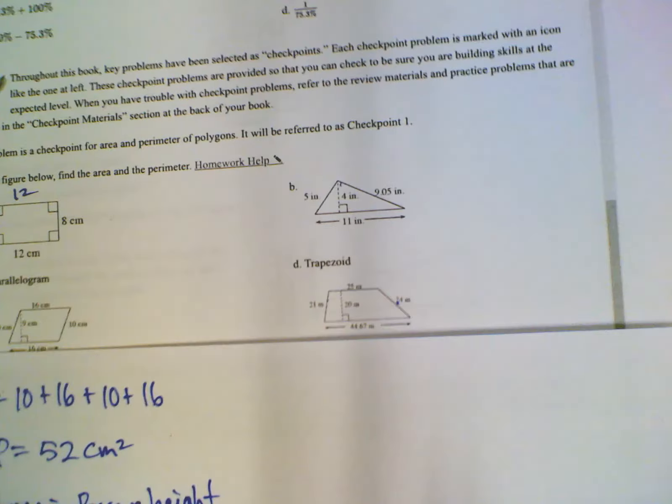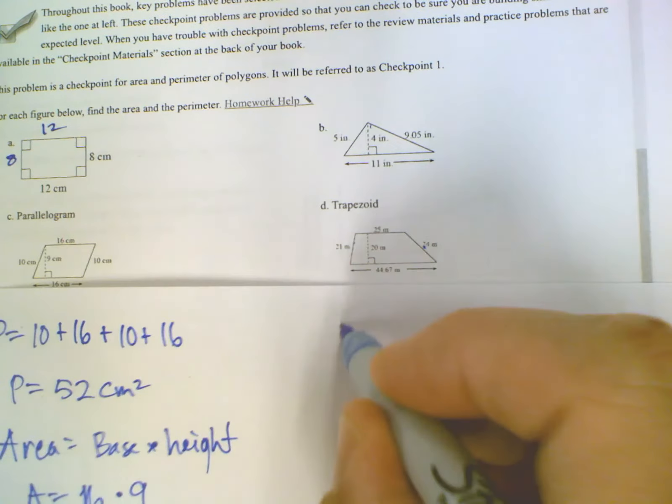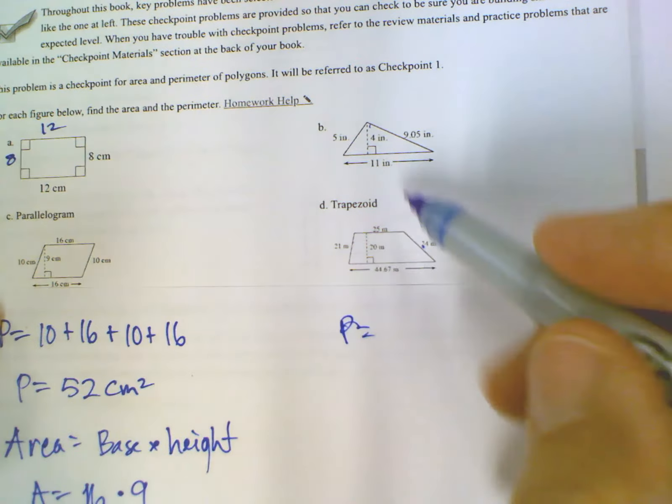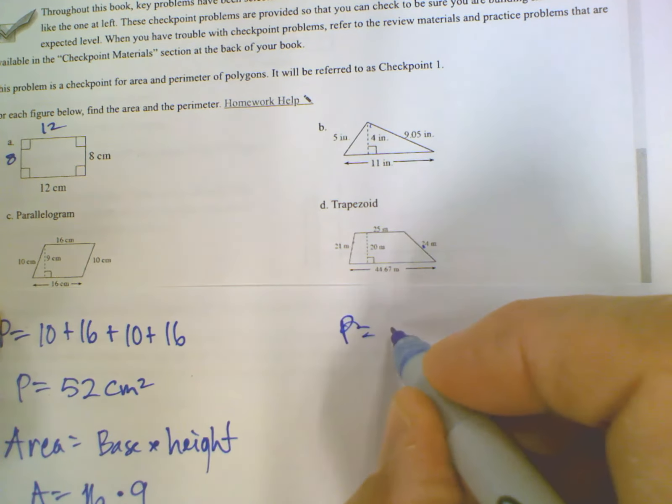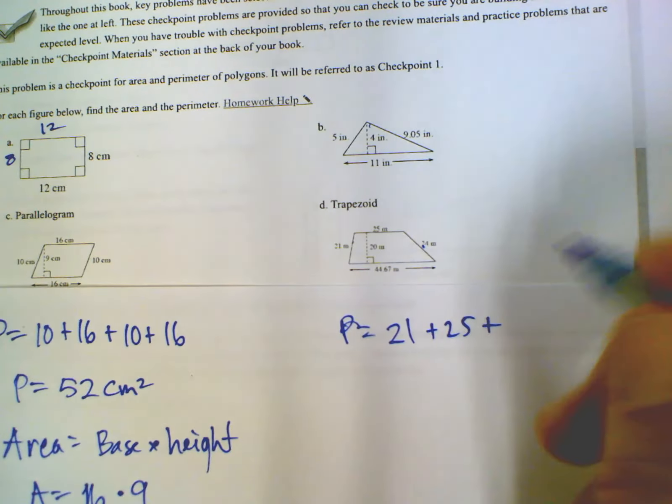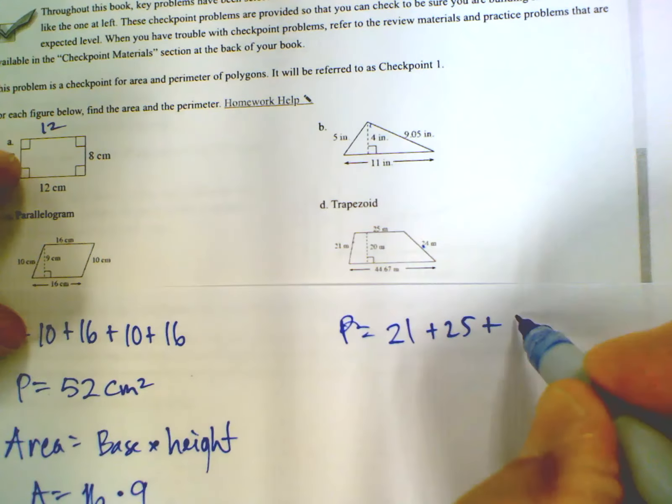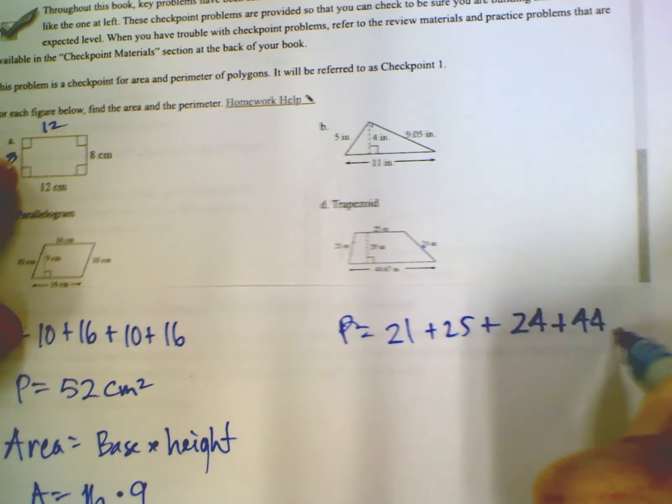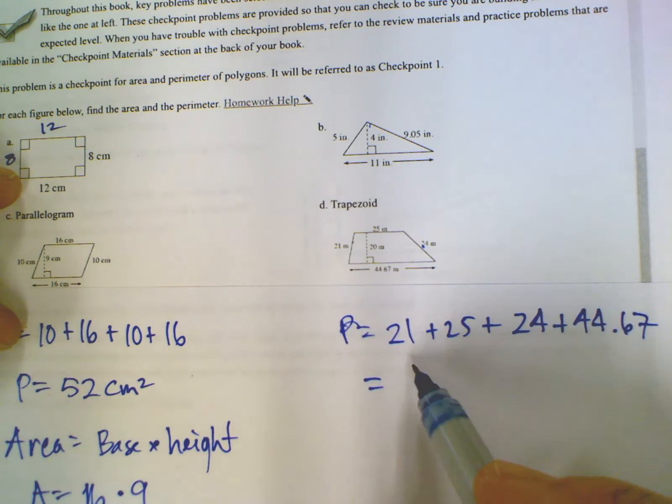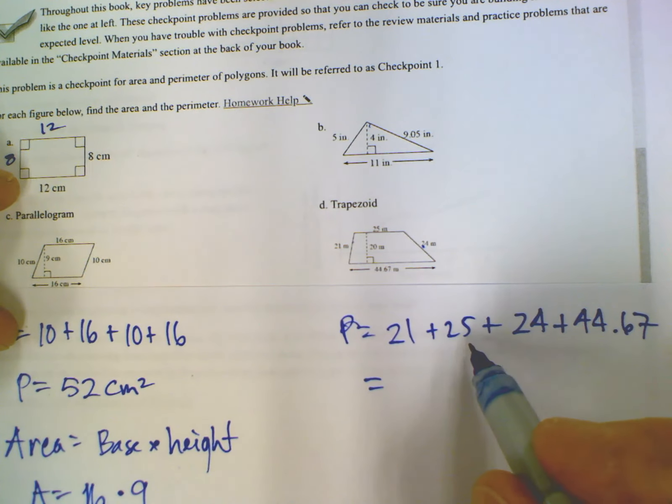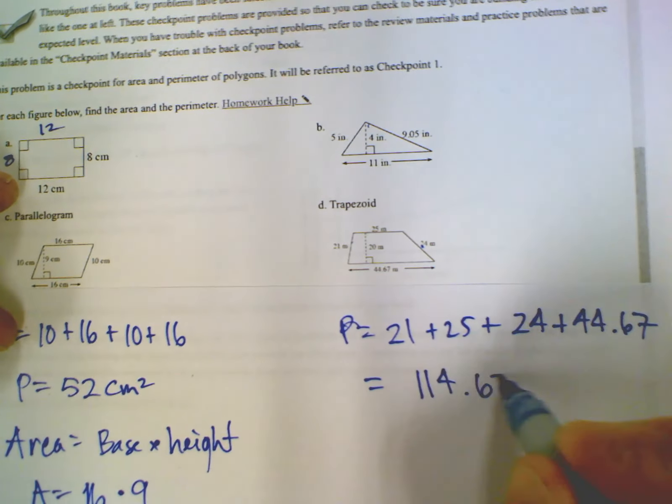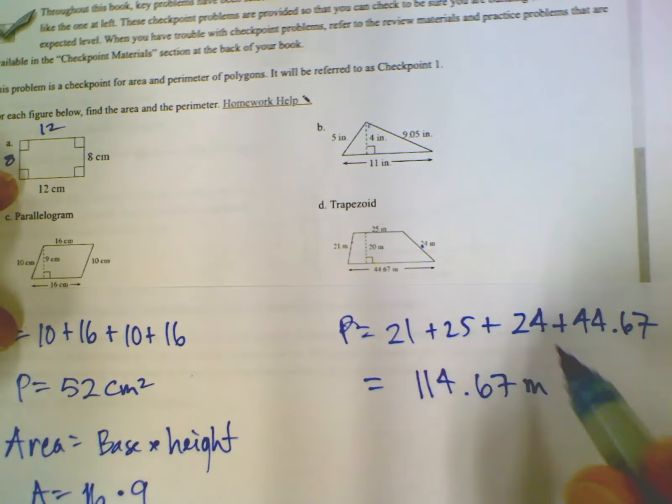Last one tells me what it is. It says it right there, it's a trapezoid. Perimeter of a trapezoid, just like all of them, add all the sides. So if I add all the sides, I'm looking at 21 plus 25 plus 24 plus 44.67. So if I add all of those up, that's 114.67, and it's just meters. So we just put an M for meters.